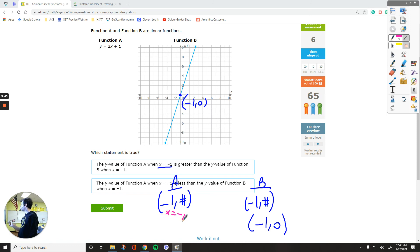x equals negative 1. Plug it in and see what you'll end up with. 3 times negative 1 plus 1. This is negative 3. And if you do plus 1 to that, you get negative 2. So negative 1, positive 2. In function A, the value is 2. In function B, the value is 0. So the value of function A is greater.